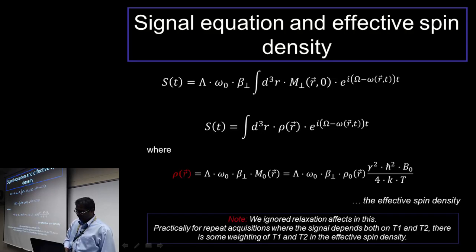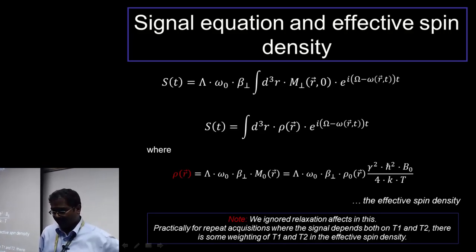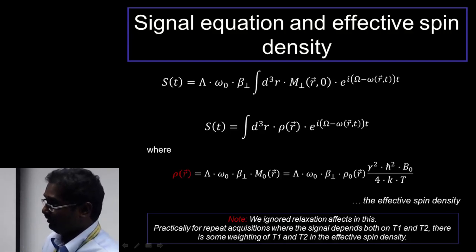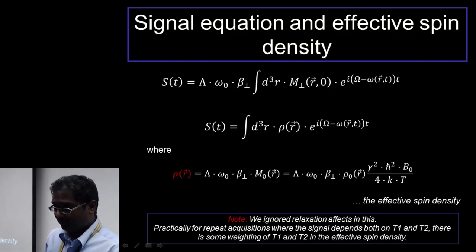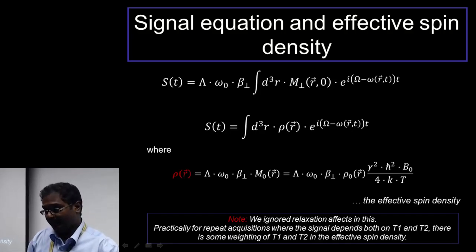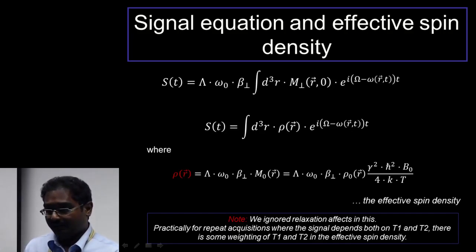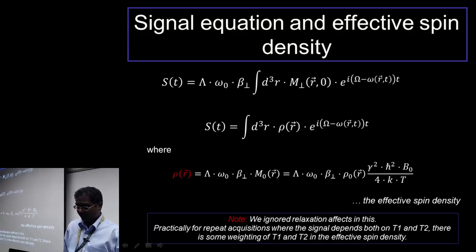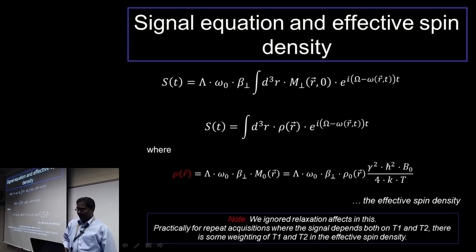A key point to note is that we have ignored the relaxation effects — the e^(−t/T2) term — that we started with in the previous equation. In reality, you cannot ignore those relaxation terms, and your effective spin density ends up being weighted to some extent by these relaxation mechanisms. So you want to be careful when you want to quantify spin density of a sample — you need to look at the experimental parameters you are using and how they depend on the relaxation terms.